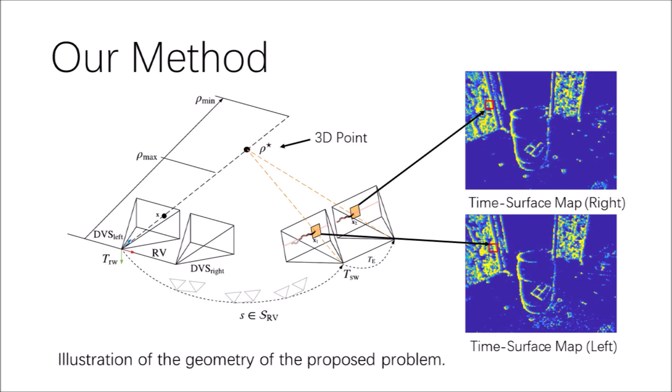Ideally, these two events should spike at the exact same time, and their coordinates should correspond to each other as defined by the epipolar geometry between the two cameras in stereo configuration.